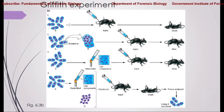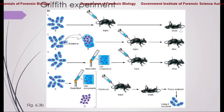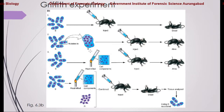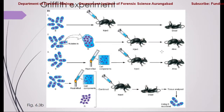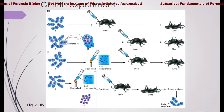In Griffith's experiment, he took the S strain — the virulent one — and injected it into mice. The mice died, proving that the S strain is a harmful, virulent strain. Then he used the R strain, which is a mutant of the S strain and is non-virulent. He injected this R strain into mice and the mice did not die, proving the R strain is non-virulent and does not cause death.